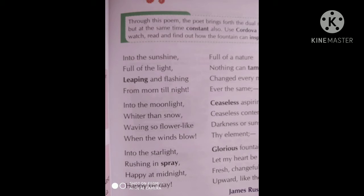Into the sunshine, full of the light, leaping and flashing, from morn till night. In the first stanza, the poet describes how the fountain looks or its motion in sunlight. He says the fountain water keeps jumping up from the spring from morning to the end of the day. 'Morn' is short form of morning. It seems to shine even brighter in the light of the sun. So the first stanza shows us a ray of hope with sunlight — sunlight and the start of day symbolize hope.